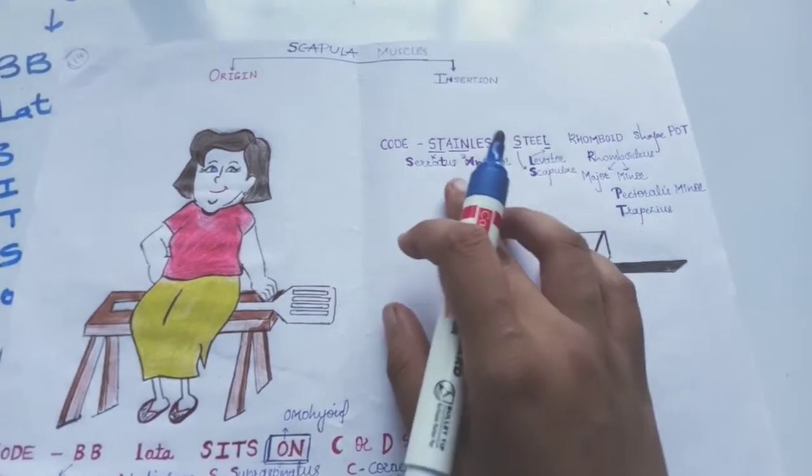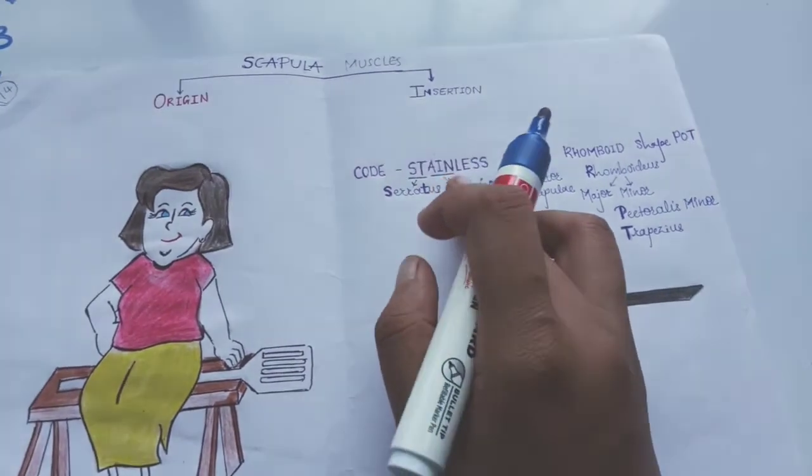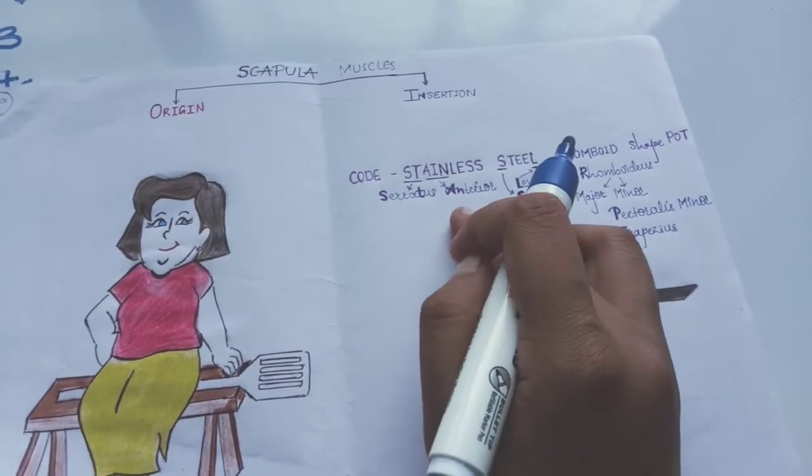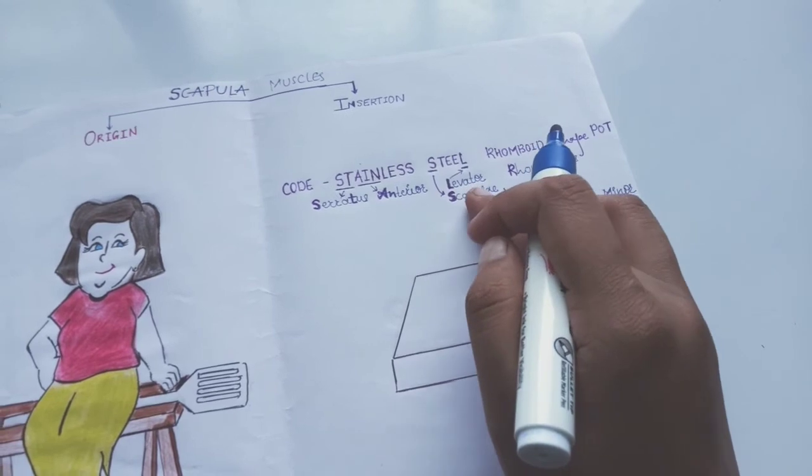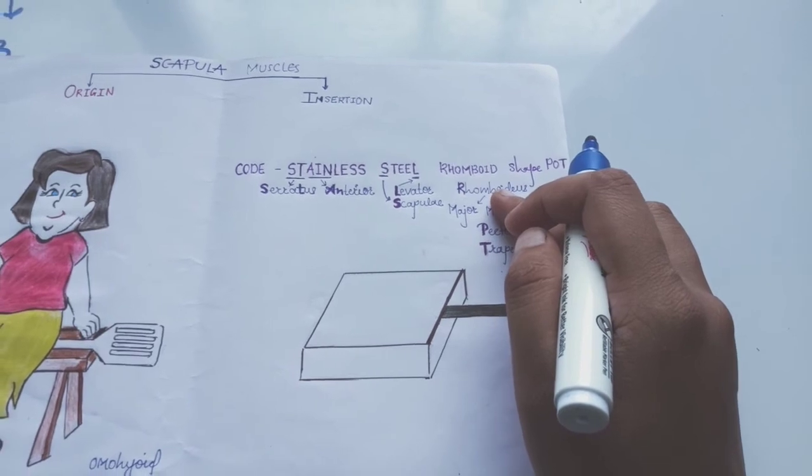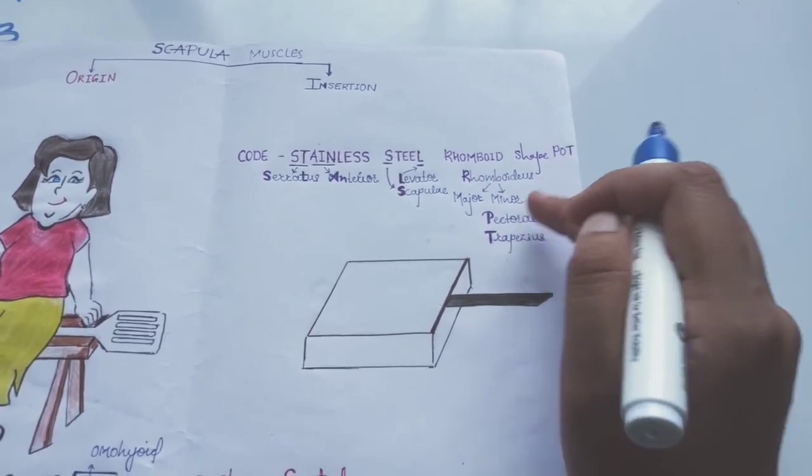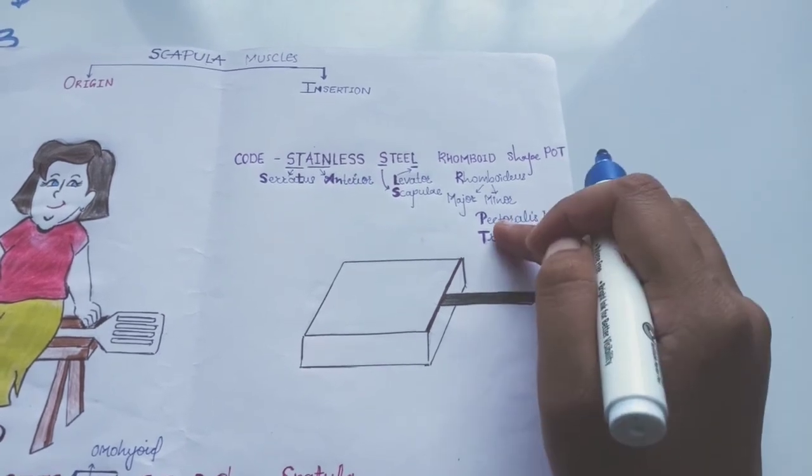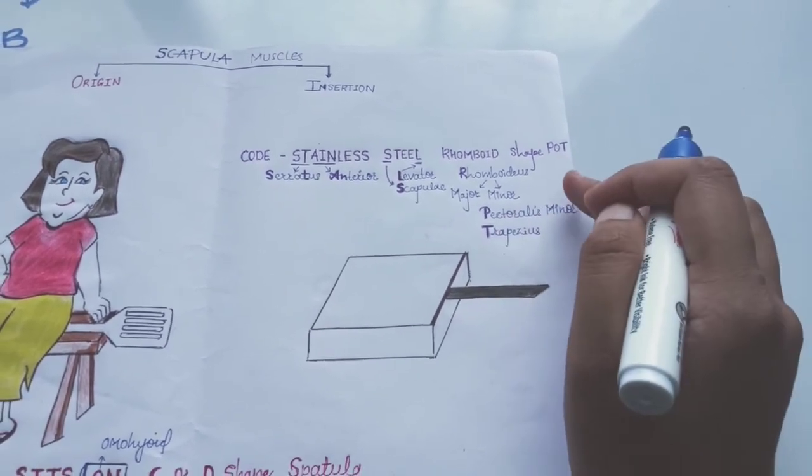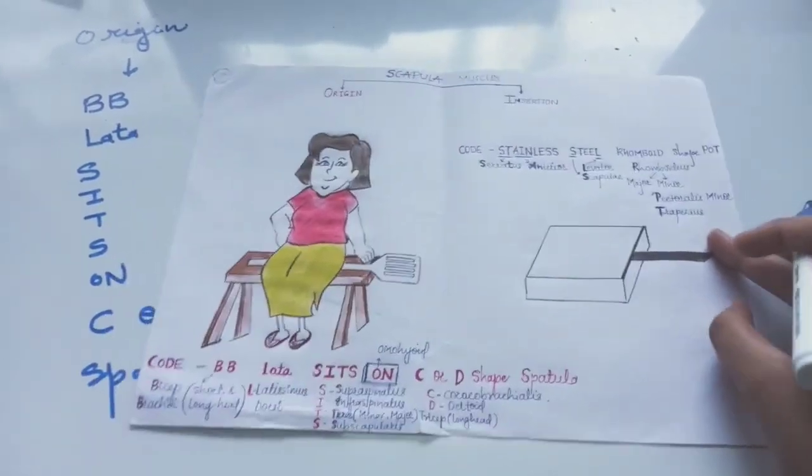ST means serratus anterior, still levator scapuli, then rhomboid shape means rhomboidus major and rhomboidus minor, what means pectoralis minor, and T means trapezius. This is the mnemonic for the scapular muscles.